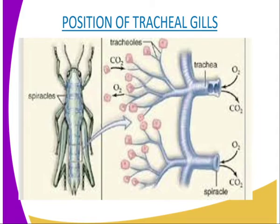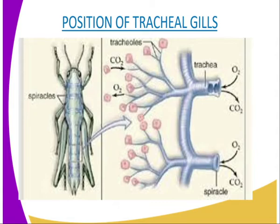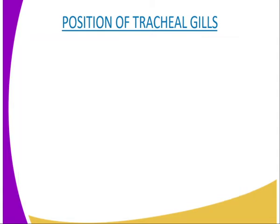Each spiracle is supplied with a muscular valve that controls its opening, and also with hairs to prevent excessive loss of water from the body tissues by evaporation. The spiracles then open into large tubes known as the trachea, which are arranged in definite patterns and penetrate the whole body of an insect. These air tubes are reinforced with spiral bands of chitin to keep them open.